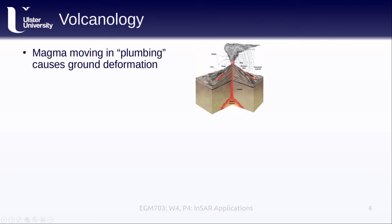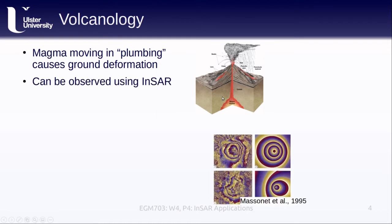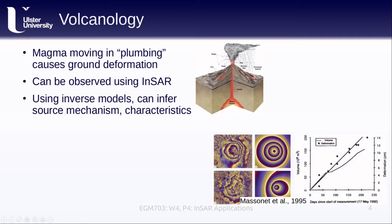When magma moves in the plumbing beneath a volcano, it causes ground deformation that can be measured using differential INSAR techniques. These movements can potentially be indicative of eruptions, so INSAR is an important component of monitoring volcanic activity. When we observe motion using INSAR, for example shown here in the interferograms on the left side of this figure, we can use inverse models to infer the source mechanism and characteristics that led to the observed deformation. These are the clean interferograms on the right that show the best fit model parameters that produced the simulated interferogram shown. There are a few example studies shown on this slide and included in the links at the end of this lesson.